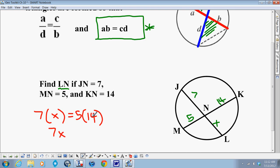5 times 14 is 70. Therefore, if you divide by 7, you get x equals 10.